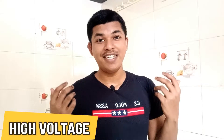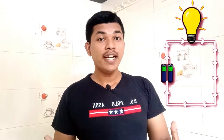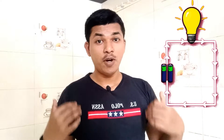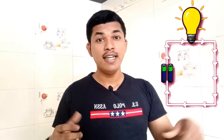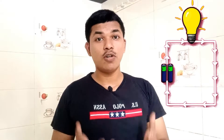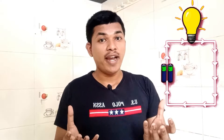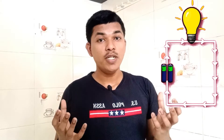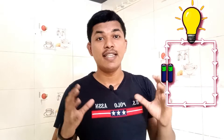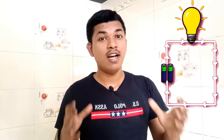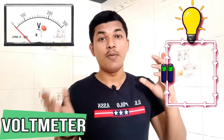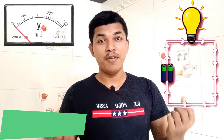The force in which the electrons are pushed forward is known as voltage. If the force is more, we can call it high voltage, and if the force is less, we can call it low voltage. If we consider a closed circuit and want to find the number of electrons flowing through it, we use an ammeter. If we want to find how much force is pushing the electrons, we use a device called a voltmeter.